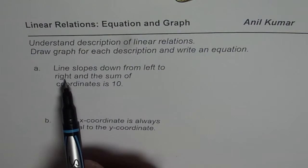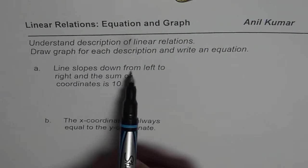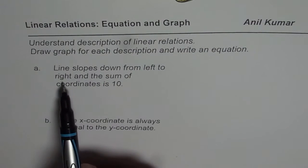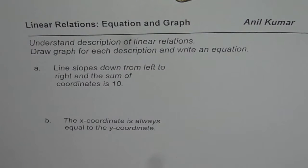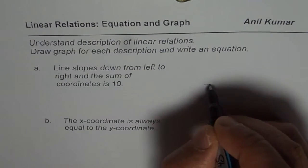First description is: line slopes down from left to right and sum of coordinates is 10. Think about it.